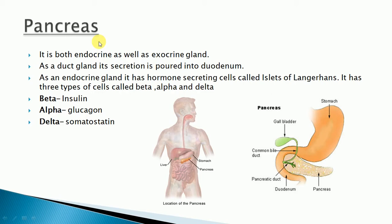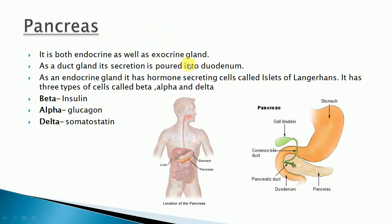Before starting with the pancreas, I want to remind you that an endocrine gland is a ductless gland — it does not need any special duct for the transport of its hormones. Its secretions are directly poured into the blood. But there is one more type of gland known as the exocrine gland.